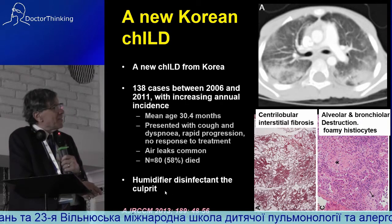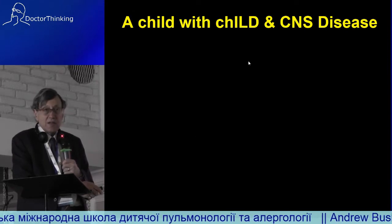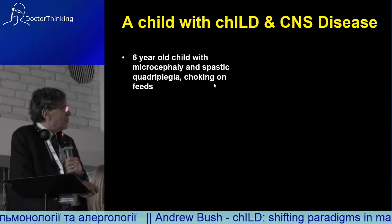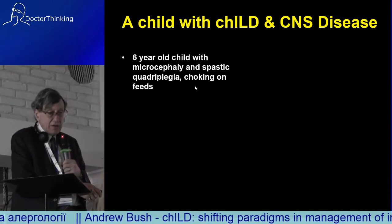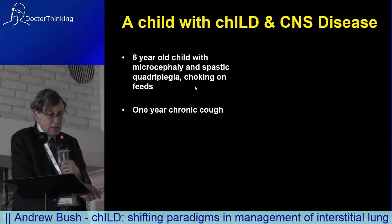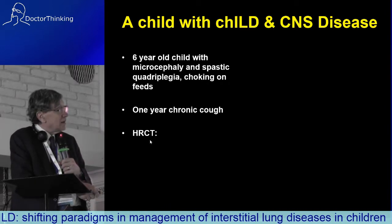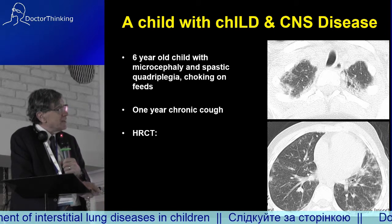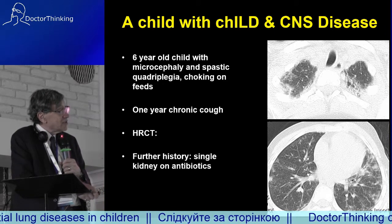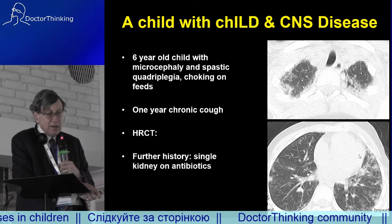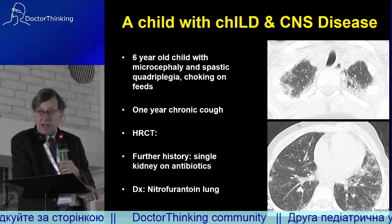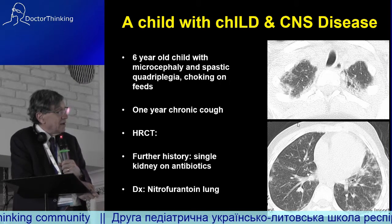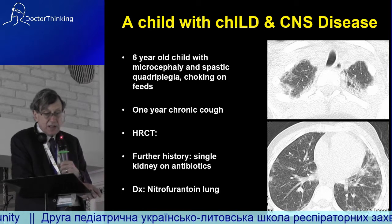Could it be iatrogenic? This is a five-year-old child with microcephaly, severe neurological handicap, choking, and a chronic cough for a year. The CT scan did not show aspiration but showed consolidation and an interstitial lung pattern. This child was on nitrofurantoin, prescribed by a urological surgeon because of a single kidney. This is nitrofurantoin lung.